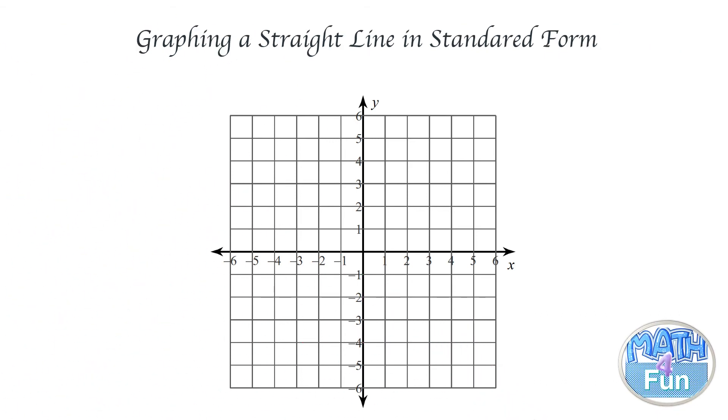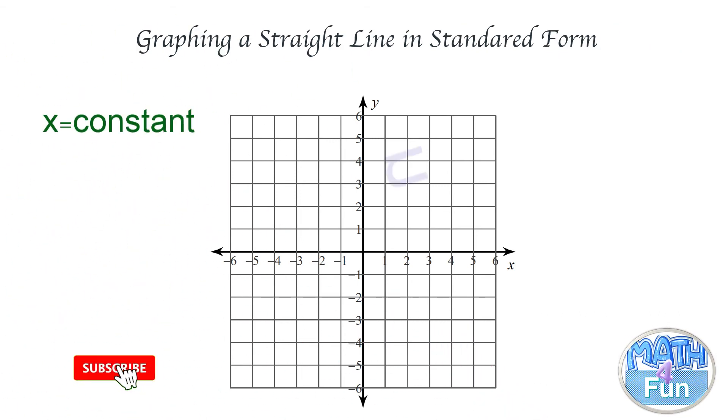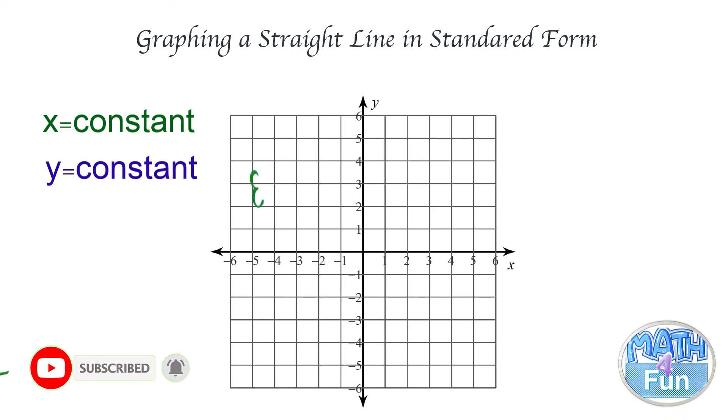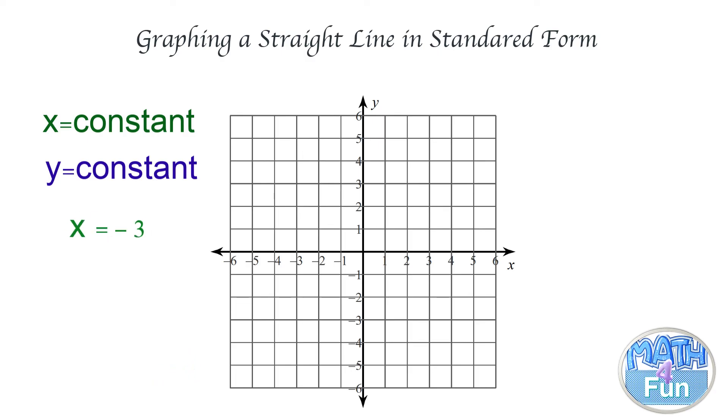Let me show you the special cases when we have x = constant or y = constant. When we have x = constant, let's say x = -3, we go on the x-axis to the point x = -3 and we draw a vertical line at that point.